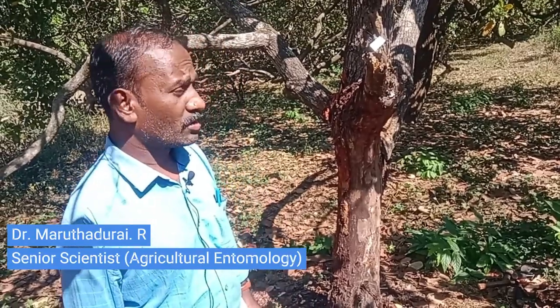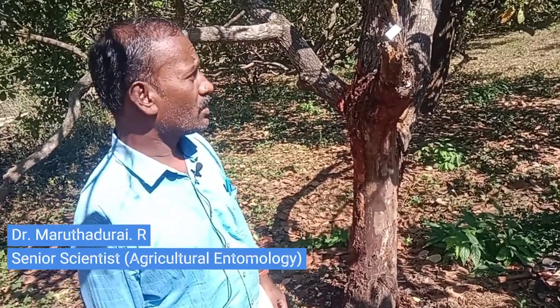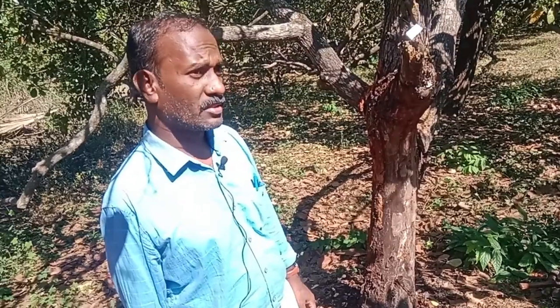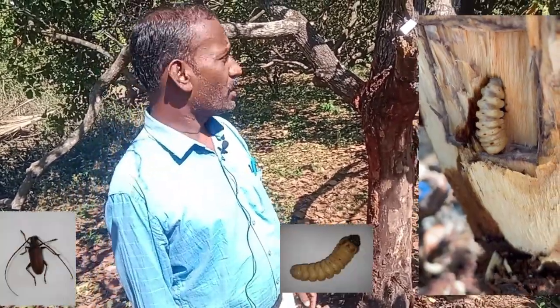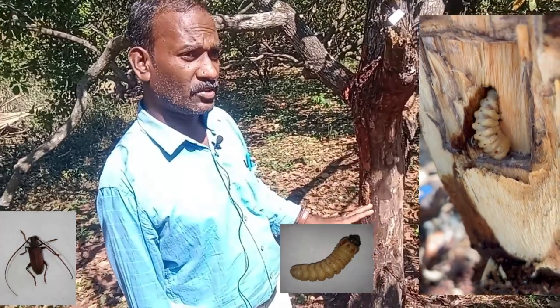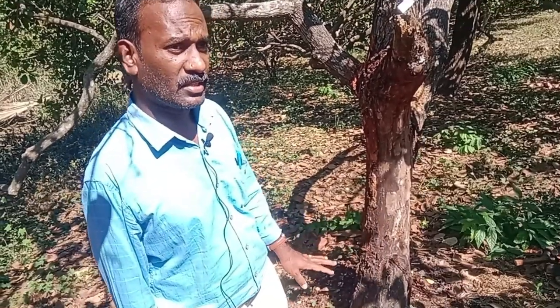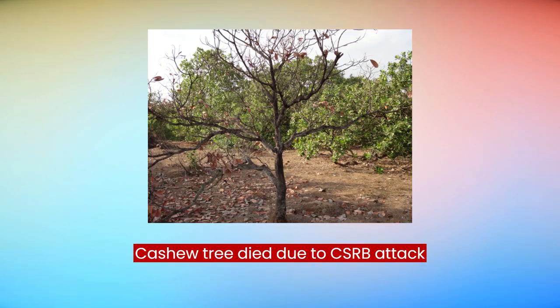Cashew stem borer, commonly known as CSRB, and the mosquito bug are the major insect pests of cashew. CSRB is an internal tissue borer that remains concealed in nature, making it very difficult to detect at the initial stage of infestation. CSRB kills five to ten percent of yielding trees every year.